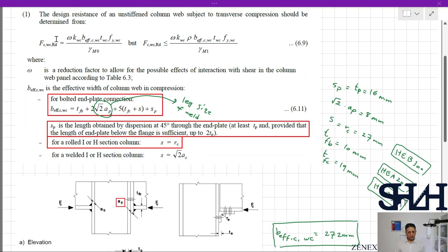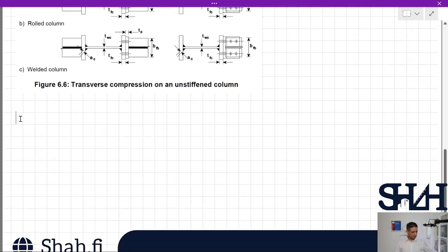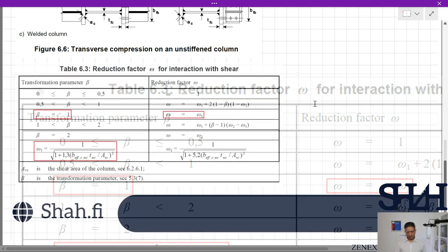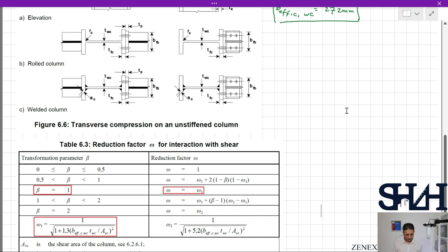Now we can determine the reduction factor ω. We had this when we were calculating column web in transverse tension. We know that β is 1, ω is ω1. beff,c,wc is 272 millimeters and twc is 11 millimeters, giving Avc = 2,743 mm².